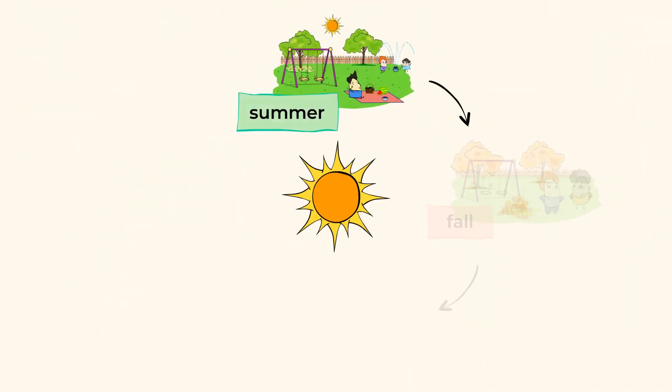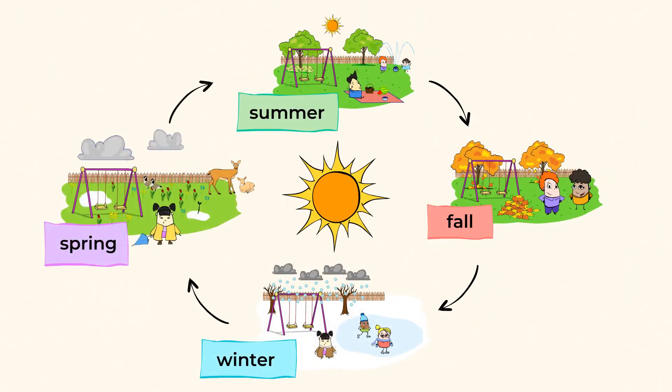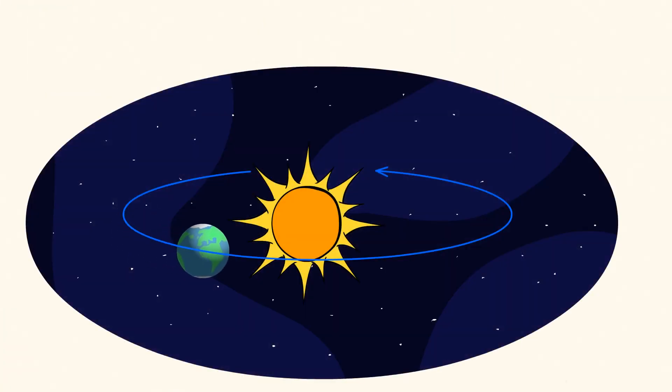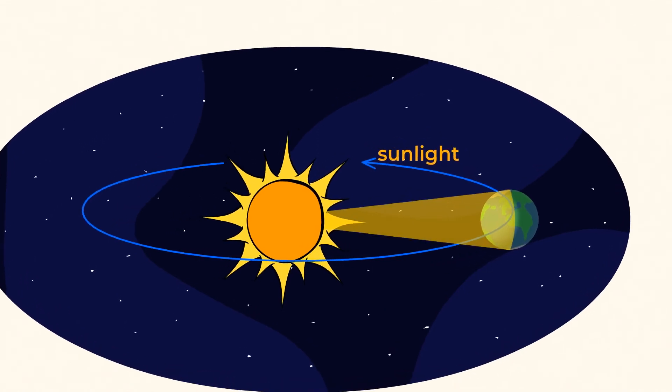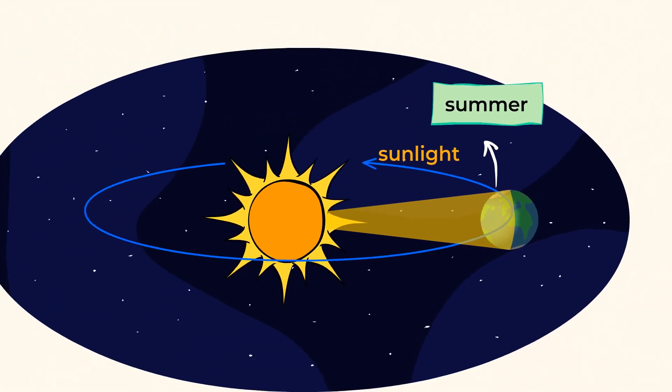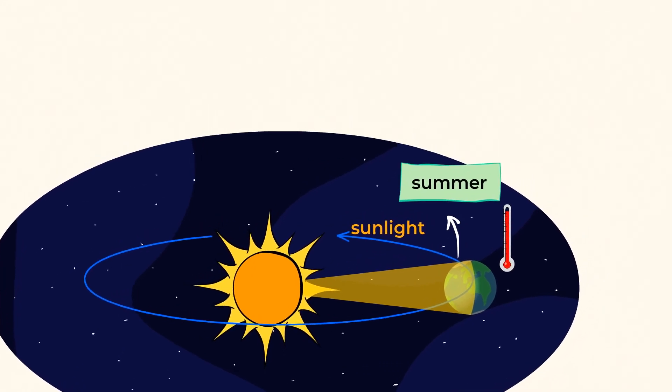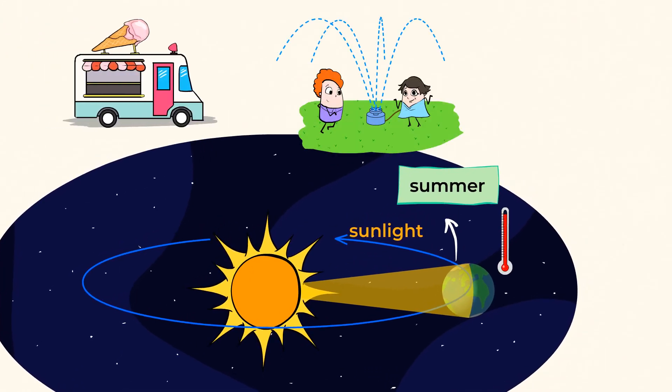The best part about our mighty seasons is that the pattern keeps repeating. Depending on where you live, the seasons happen at different times of the year because our mighty earth gets different amounts of sunlight as it orbits around the sun. When earth is tilted toward the sun, it gets direct sunlight, and in that part of the world, it's summer. Temperatures are warm, days are longer, and we cool off with plenty of water and ice cream.